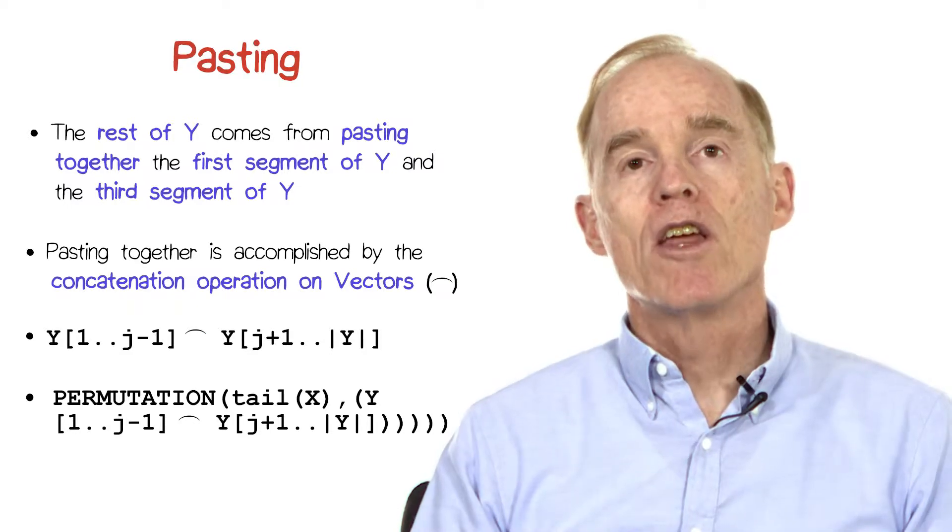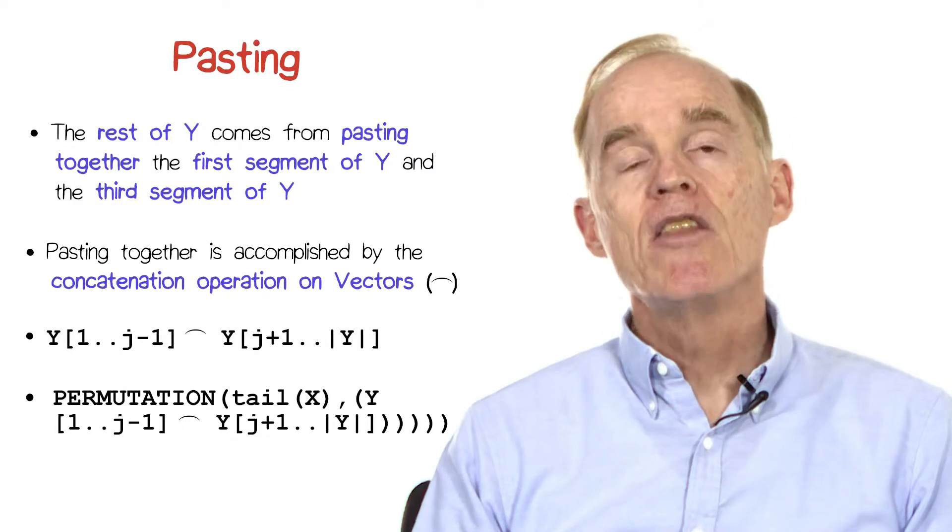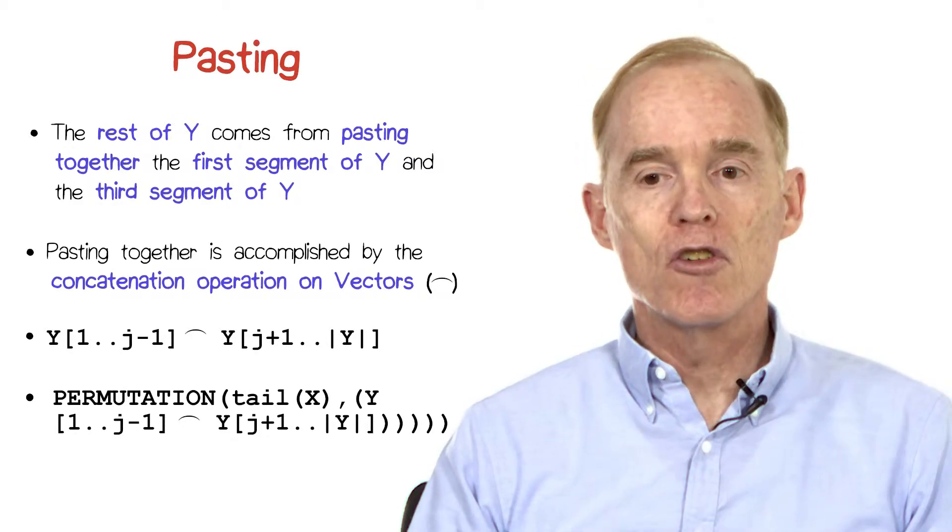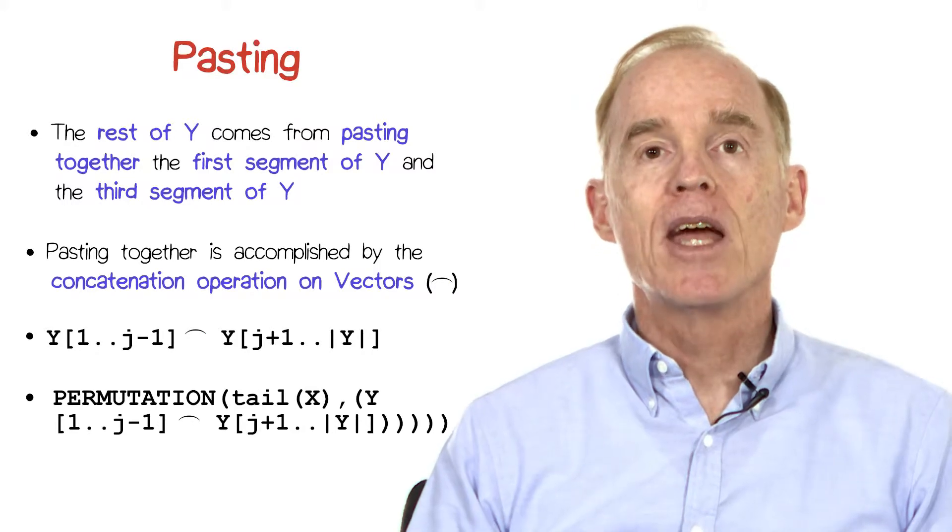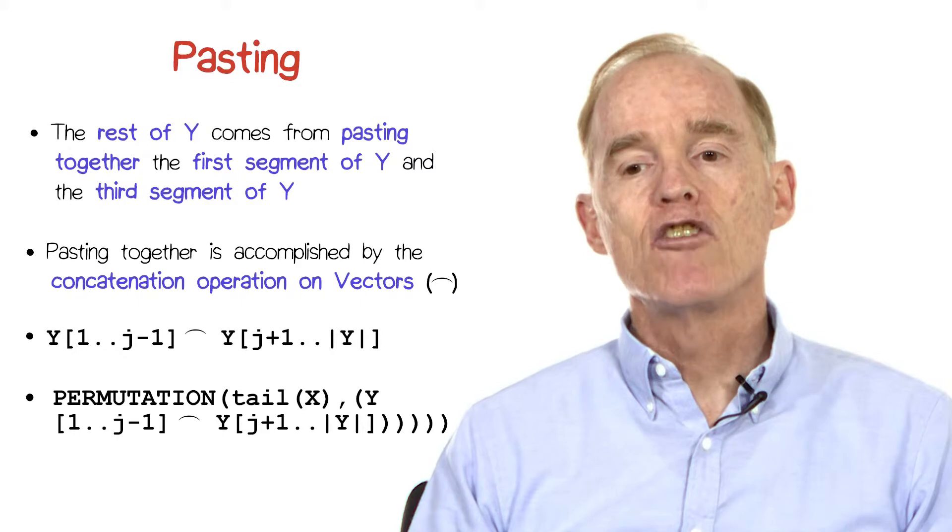In particular, we're going to say that in order for the output to be a permutation of the input, in the case where we don't have a match in the first position, it had better be the case that the following two things are permutations of each other.